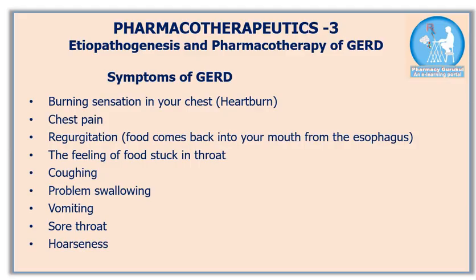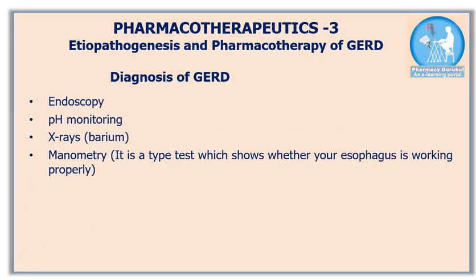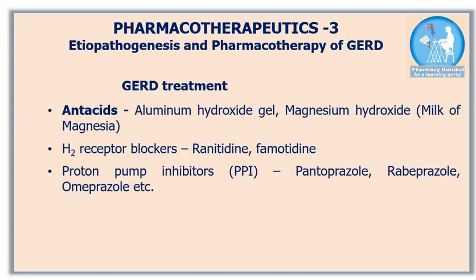GERD is also known as acid reflux, acid regurgitation, or simply reflux. The main symptoms of GERD include heartburn, chest pain, and regurgitation — a condition when food comes back into the mouth from the esophagus. Sometimes you feel that food is stuck in your throat. Coughing, vomiting, soreness, and hoarseness are other symptoms. GERD can be diagnosed by endoscopy, pH monitoring, X-ray, and manometry.